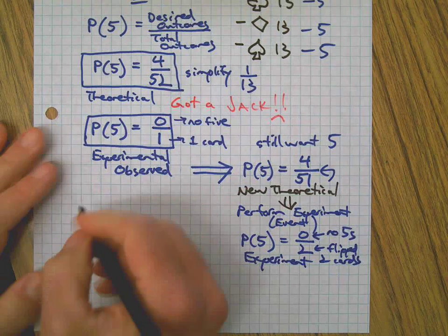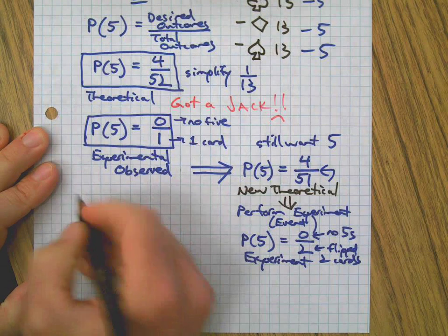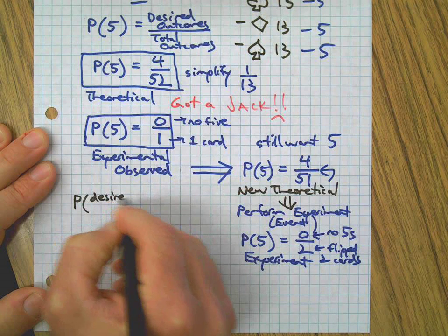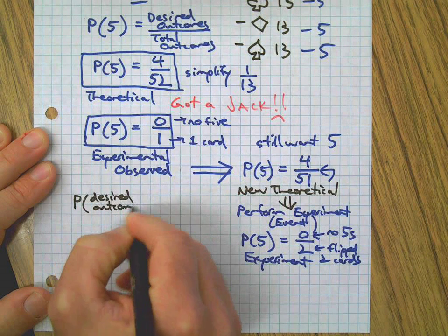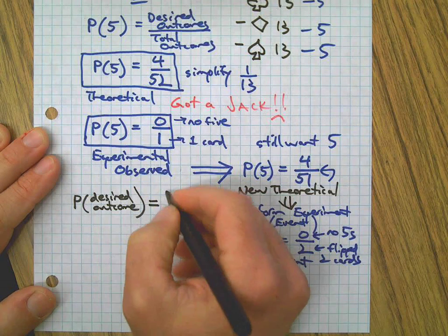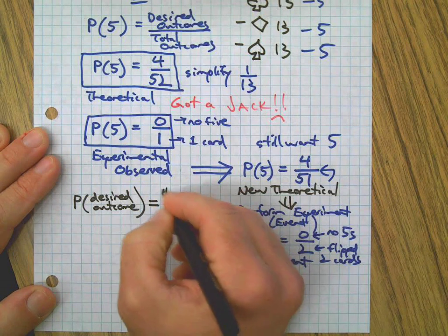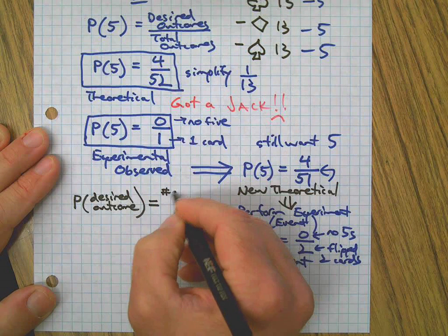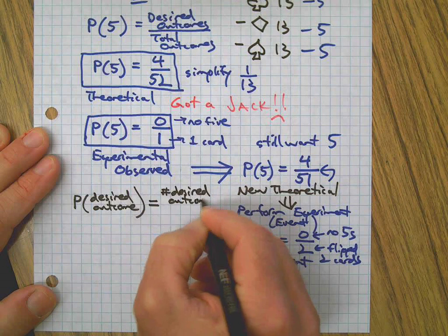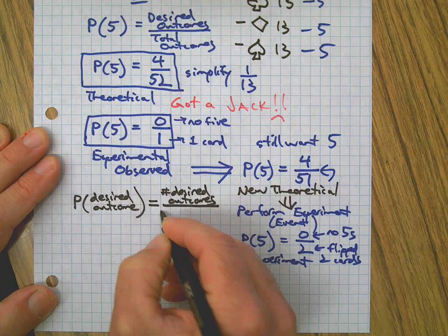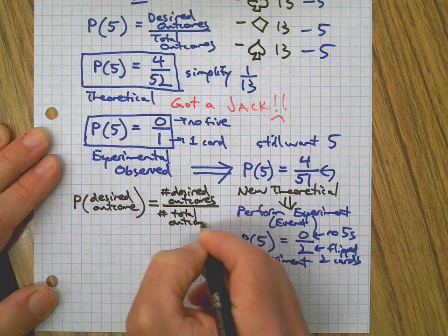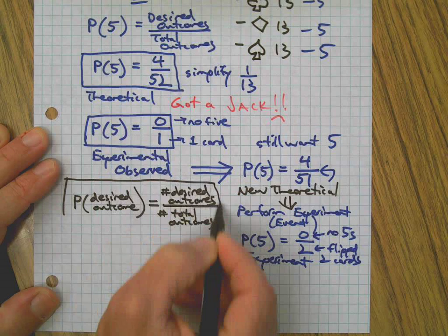But the key thing to learn out of all of this is simply this: that a probability statement is probability of your desired outcome—the thing you want—is how many desired outcomes? In this case, there were four fives in the deck, so it's not always one out of something. The number of desired outcomes over the number of total outcomes for that event. In this case, the event was flipping a card.